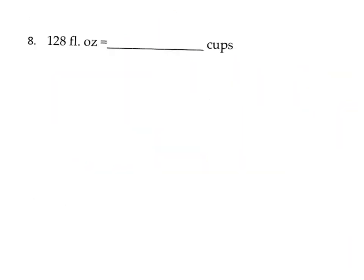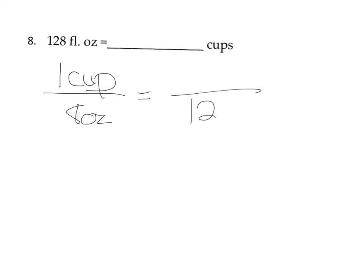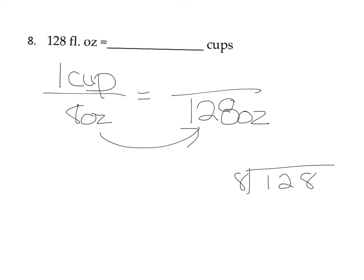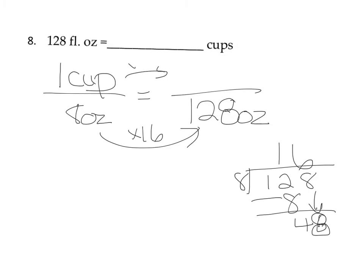Next: 128 fluid ounces equals how many cups? We should know that 1 cup has 8 ounces. We have 128 ounces. To find the multiplier, we divide: 8 goes into 12 one time leaving 4, bring down the 8, and it goes in 6 times. So it's multiplying by 16, which means we multiply the cups by 16. So there are 16 cups in 128 fluid ounces.